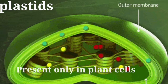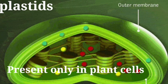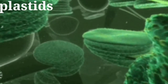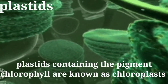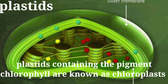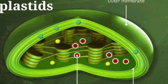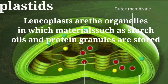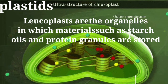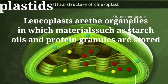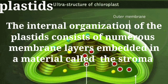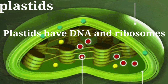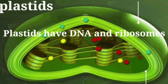The next organelle is plastids, which are present only in plant cells. There are two types of plastids: chromoplasts and leukoplasts. Chromoplasts are the colored plastids present in leaves, flowers, and fruits. Plastids containing the pigment chlorophyll are known as chloroplasts, and they are important for photosynthesis in plants. Chloroplasts also contain various yellow or orange pigments in addition to chlorophyll. Leukoplasts are found primarily in organelles where materials such as starch, oils, and protein granules are stored. The internal organization of plastids consists of numerous membrane layers embedded in a material called stroma. Plastids are similar to mitochondria in external structure and have their own DNA and ribosomes.